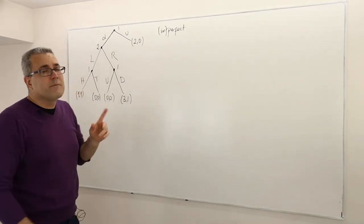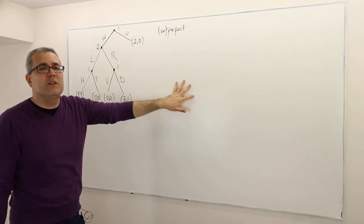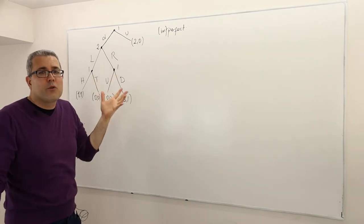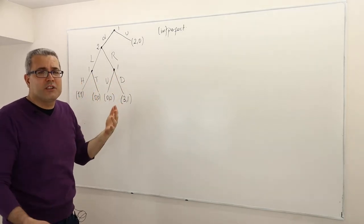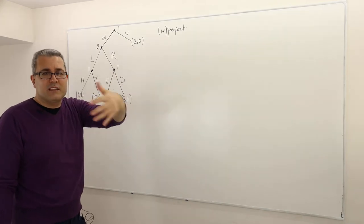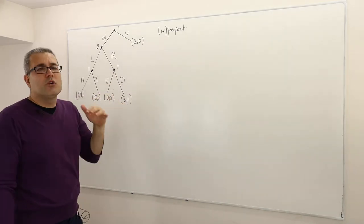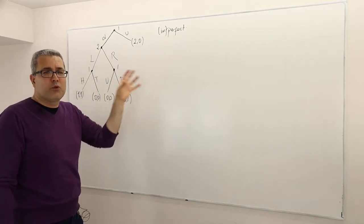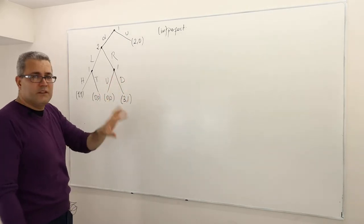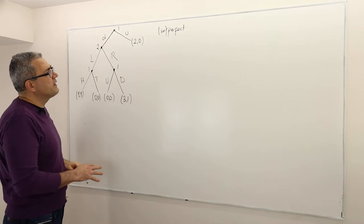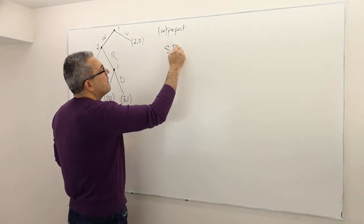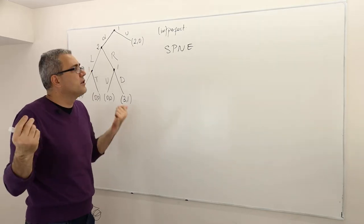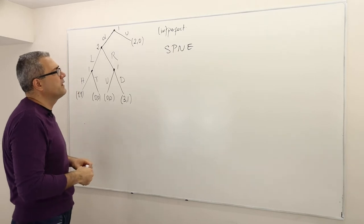That's probably the easiest way, but when the game is more complicated — meaning more players, like four or five, or more actions — writing the normal form is not so straightforward. So you must understand how to verify whether a strategy profile is a Nash equilibrium or not. First let's find the SPNE. Some textbooks call it subgame perfect equilibrium and ignore 'Nash,' but for me it's SPNE — subgame perfect Nash equilibrium.